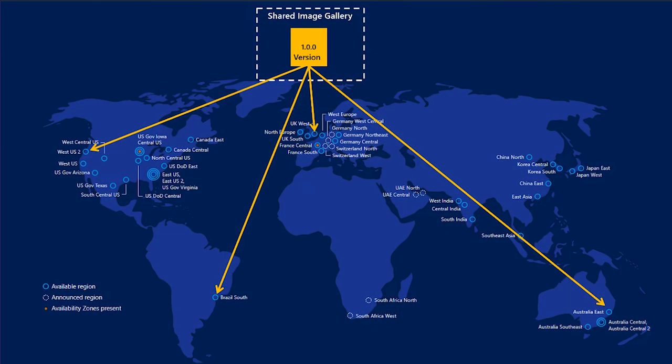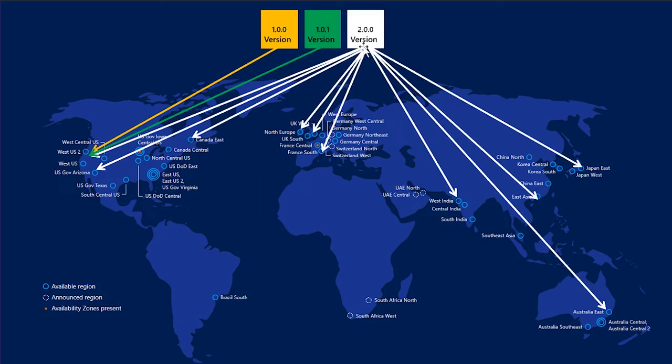We've also introduced regional replication per version. You can decide that one version is only in one location versus version two which is in many. The benefit of that is cost savings — you can have the latest version in many regions and all the older versions in only one region.